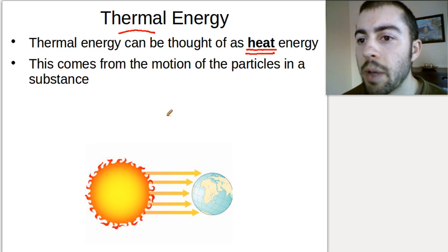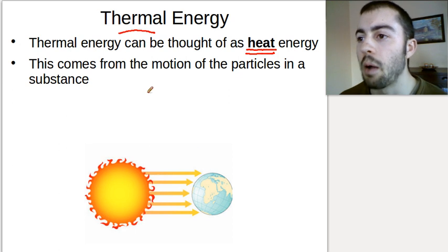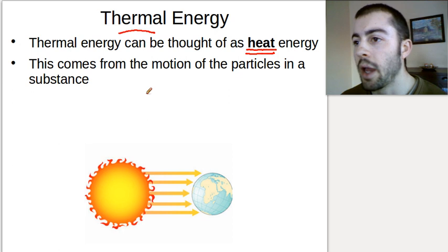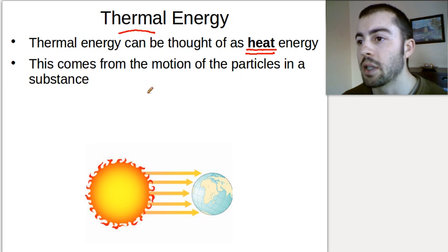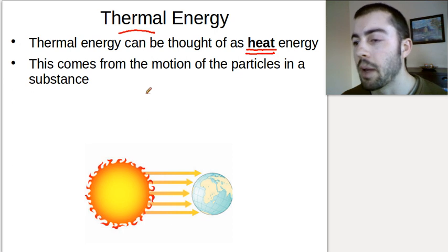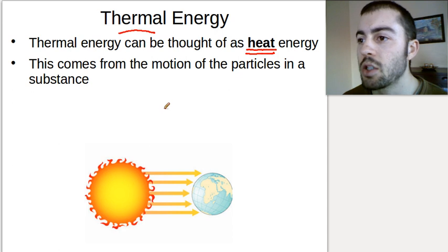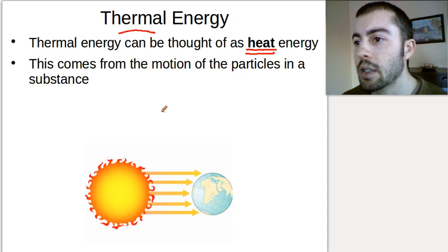Thermal energy depends on two things: how hot something is — how much heat it has — and also how big the object is. By big, I mean mass and not volume. So how much mass is inside the object and how hot it is.